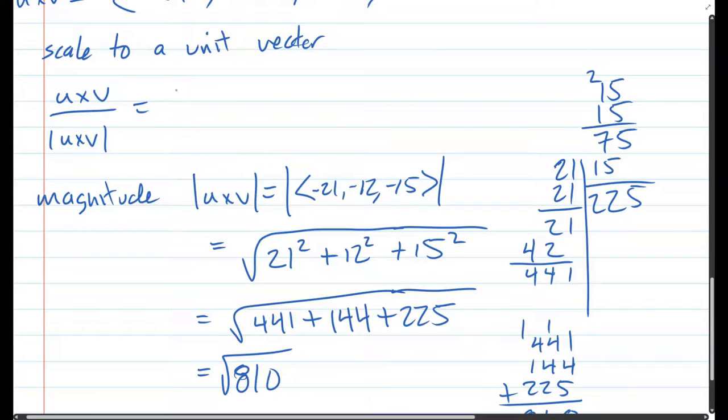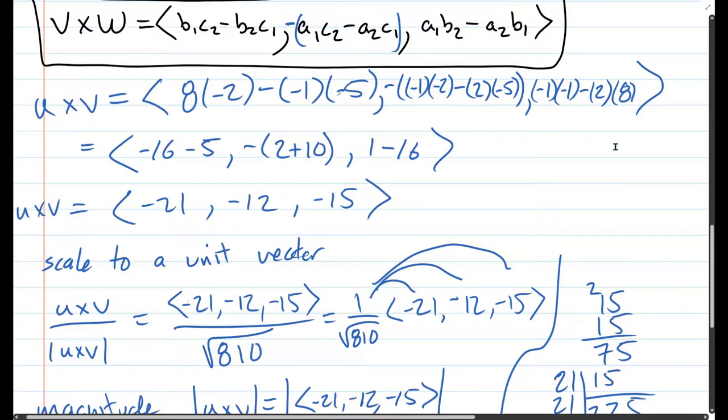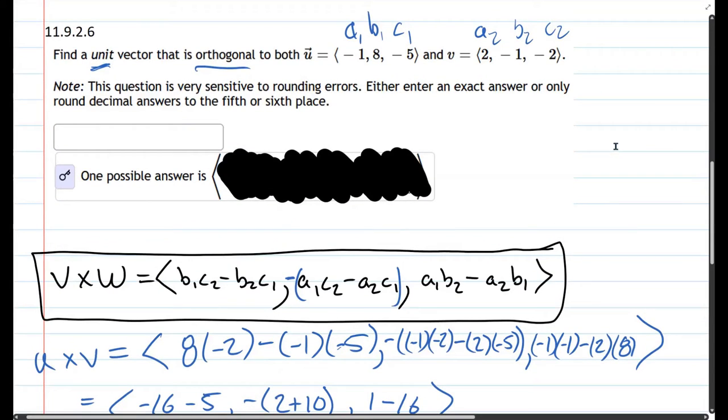So our answer will be u cross v: negative 21, negative 12, negative 15, divided by square root 810. And of course you can distribute - this is the same as 1 over square root 810 times that vector. And here you can distribute this fraction to each term, and hopefully that's what we're gonna see at the top.